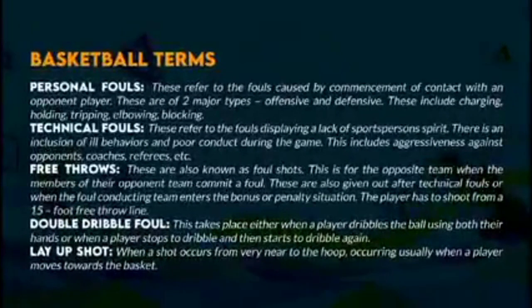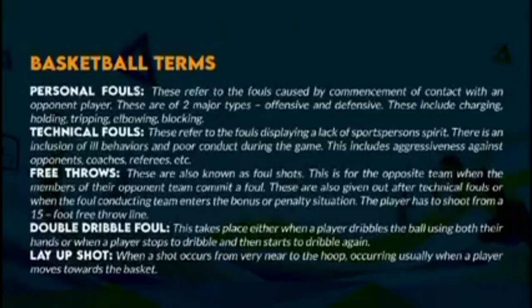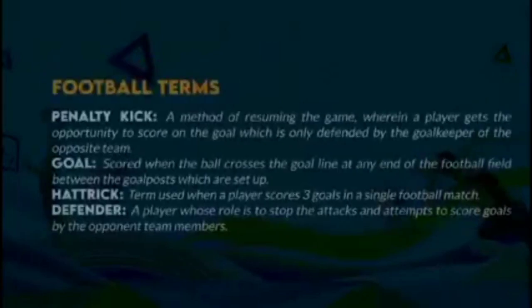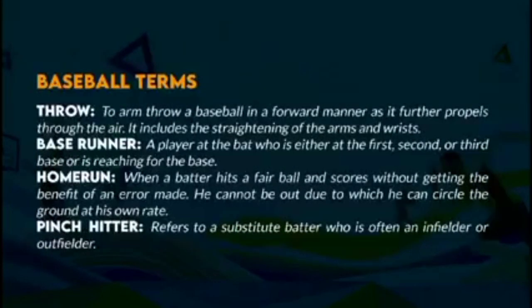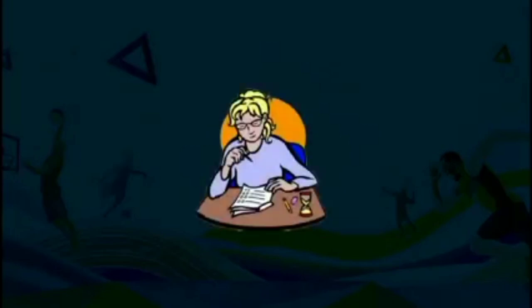Here are some types of sports including the different terms used in a particular field. First, we have basketball terms such as personal fouls, technical fouls, free throws, double dribble fouls, and layup shot. We also have football terms such as penalty kick, goal, hat trick, and defender. There are also baseball terms such as throw, base runner, homerun, and pinch hitter. These are just some of the terms used in different sports. As a sports writer, it is important to know these because it increases awareness and helps us write an impressive sports article or sports story.